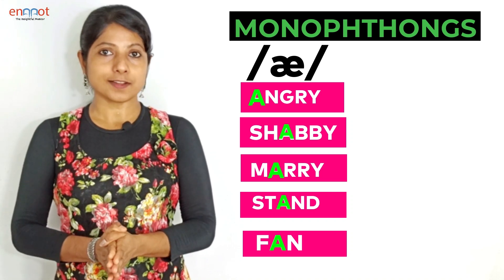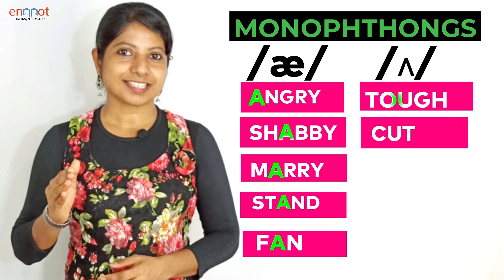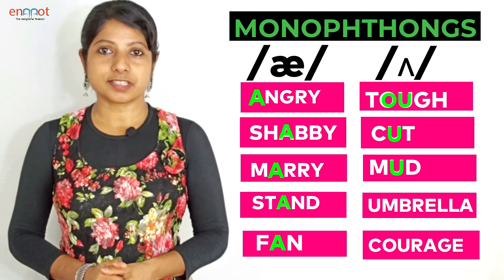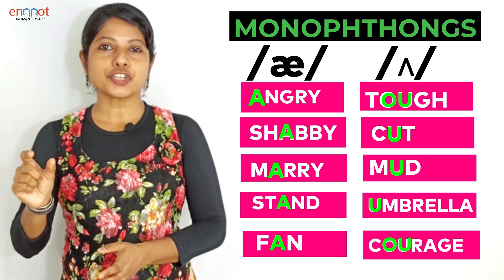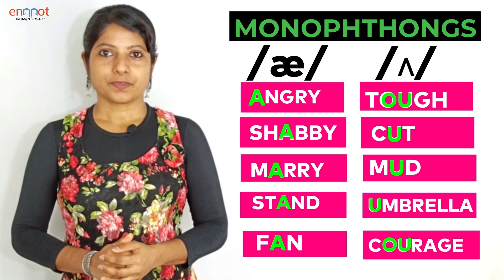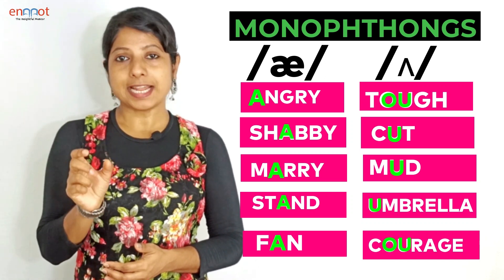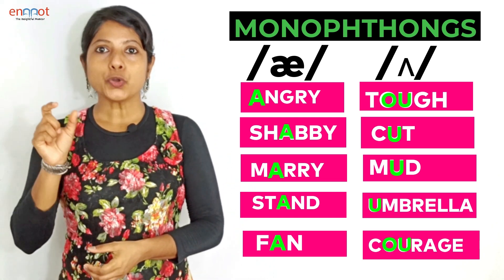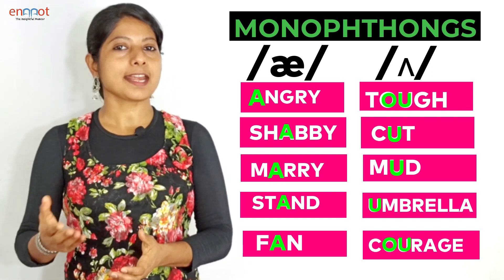The next short vowel is /ʌ/ as in: tough, cut, mud, umbrella, courage. In the word 'courage', O and U together produce the sound /ʌ/. In 'umbrella', the letter U produces the sound /ʌ/, and in 'tough', O and U produce the sound /ʌ/.